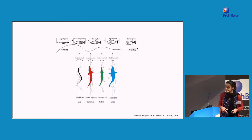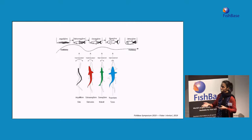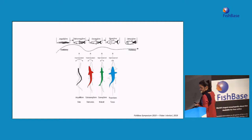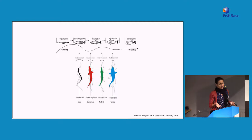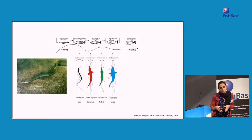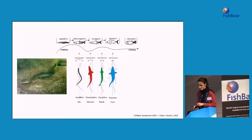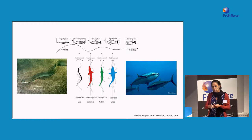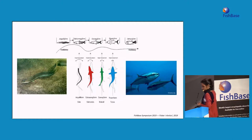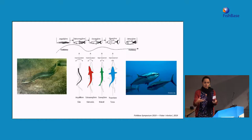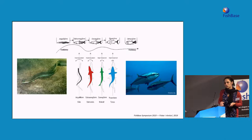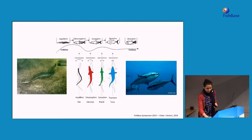Fish can be classified according to how they use their body and appendages to swim. They can be classified as anguilliform — like eels — which use the entire body to navigate in a wave-like curve. Or like tuna, which mainly uses its tail to create the forces needed to propel. All of this is related to decreasing the energy associated with locomotion.